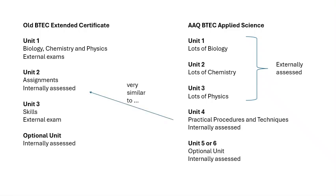Unit 4 is very similar to Unit 2 in the old BTEC — you're given assignments to complete, and each one is graded pass, merit, or distinction. Topics include things like colorimetry and titration. Units 5 and 6 are the two optional units, which I won't go into at the moment.